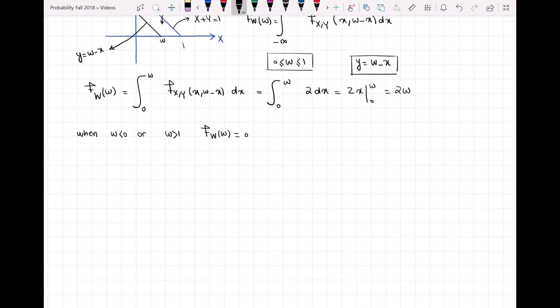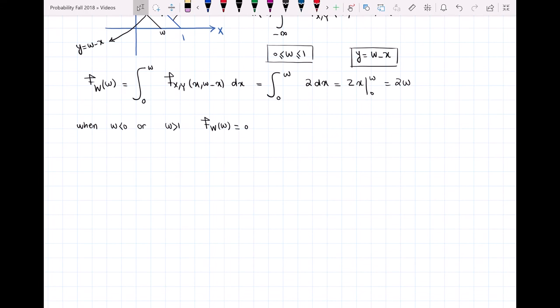So the PDF of W is equal to 2W when W is between 0 and 1, and 0 otherwise.